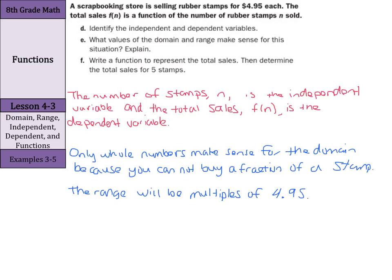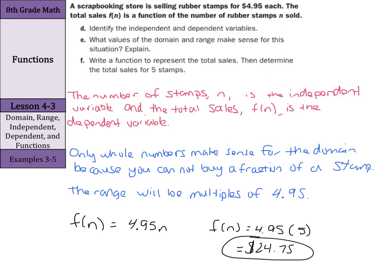To write a function for total sales: f of n equals $4.95 times n. The total sales equals $4.95 per stamp times the number of stamps. We can use that function to find the value of five stamps by substituting five in for n: $4.95 times five equals $24.75. That's it — hope you learned something along the way. Good luck!